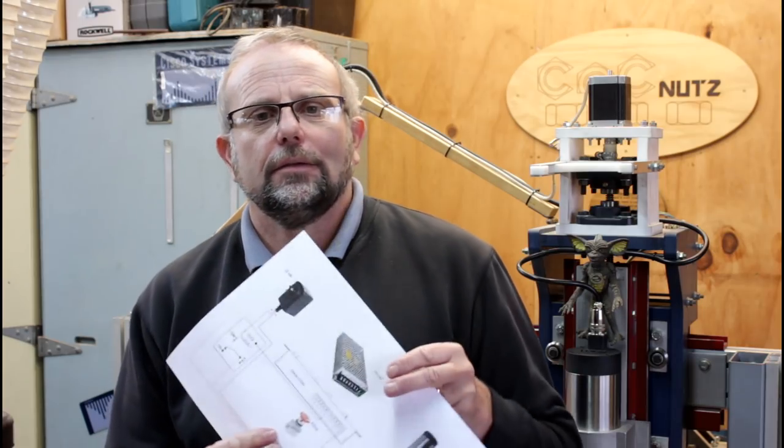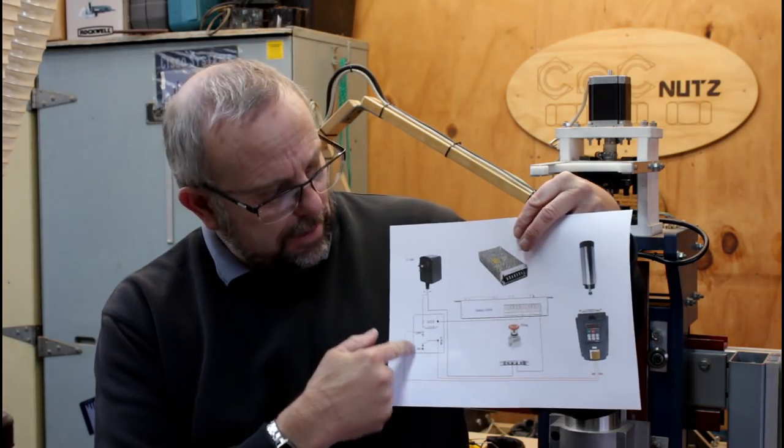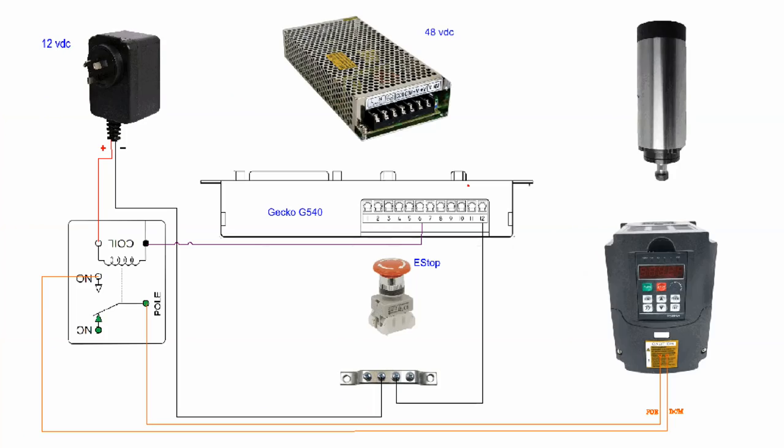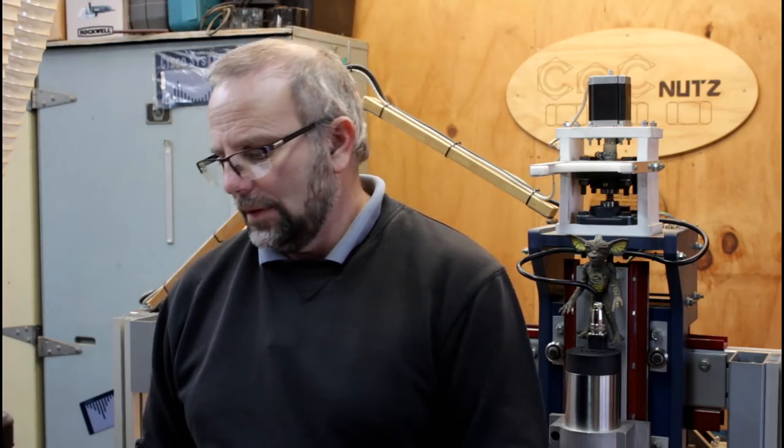So now that we have that relay under control of Mach 3 or UC CNC we need to run some wires between the relay and the VFD. These connect to the FOR and DCM terminals within the VFD. But that's not all we need to do. We also need to make some programming changes to the VFD itself.